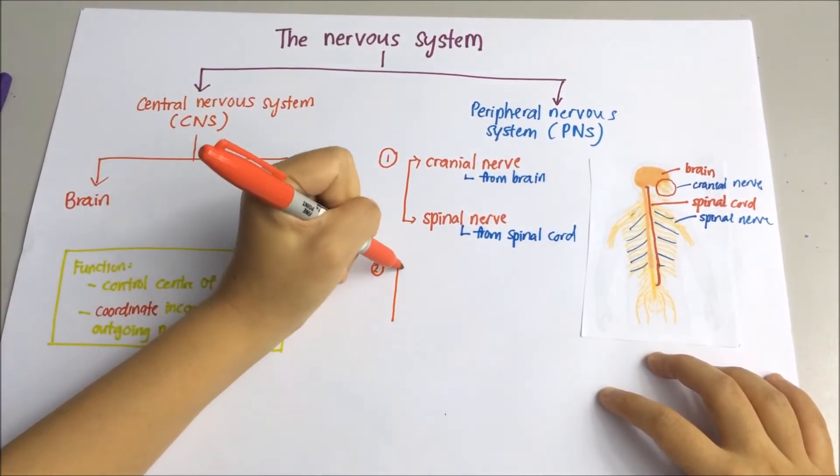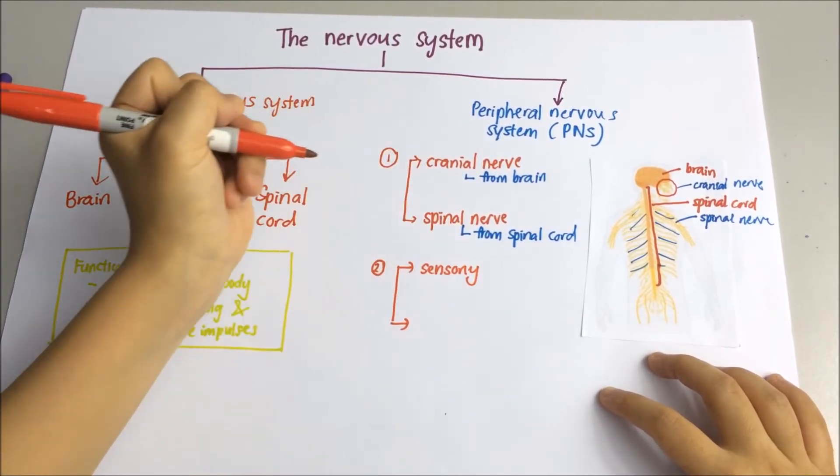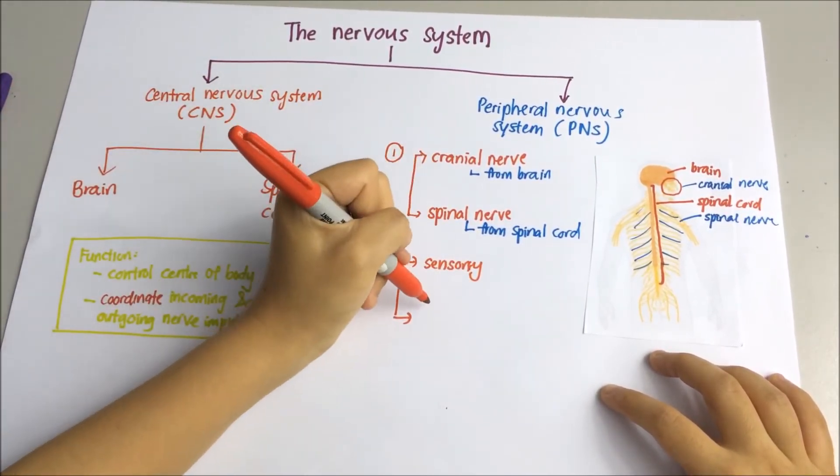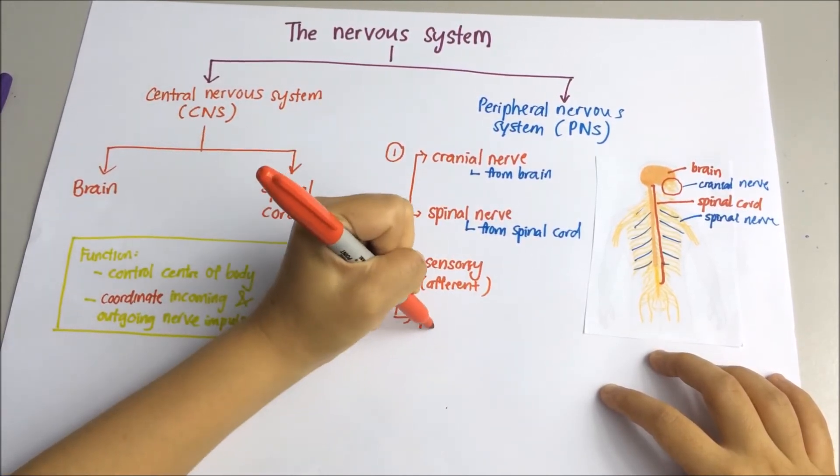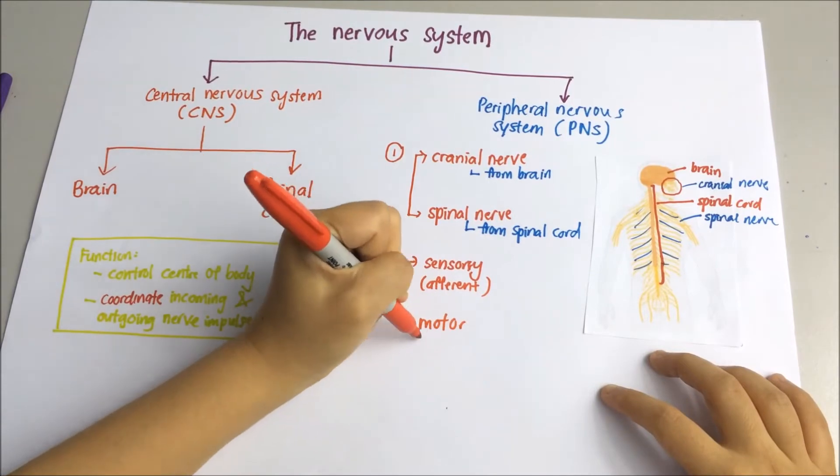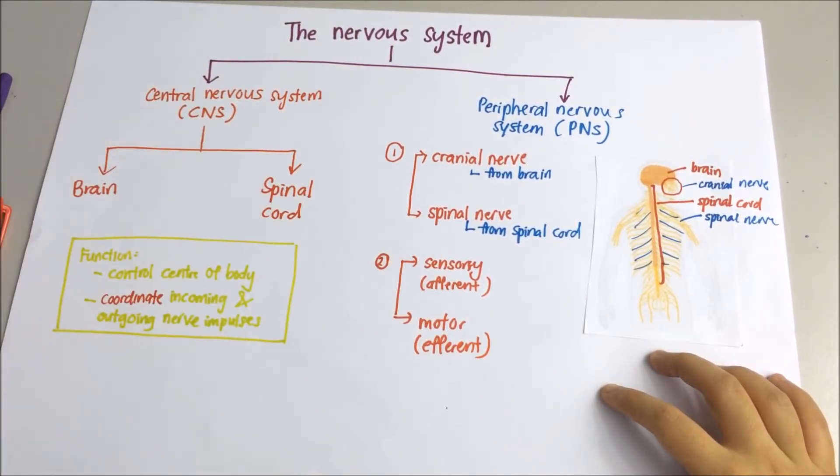We can also divide peripheral nervous system into sensory and motor. Another word for sensory is afferent. For the motor, it will be efferent.